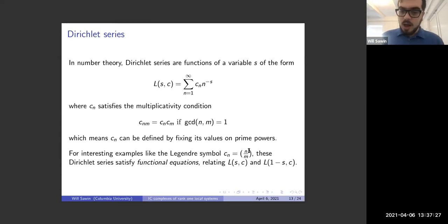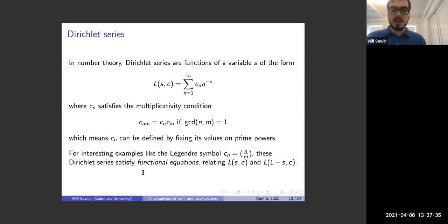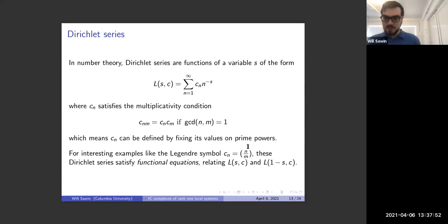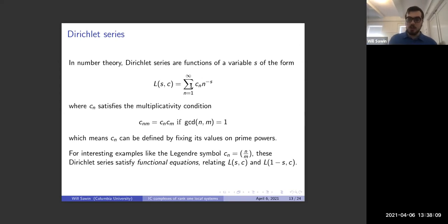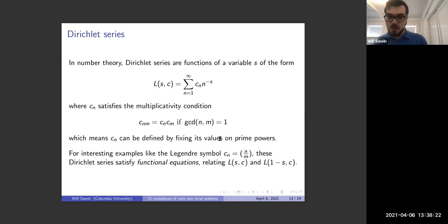One of the most important properties that Dirichlet series tend to have — depending on which multiplicative coefficients you use — are functional equations. For example, if we take C_n to be the Legendre symbol (n/M): when M is prime this is +1 if n is a square mod M, -1 if n is not a square mod M, and 0 if n is a multiple of M; for M not prime, we extend by multiplicativity. This is a Dirichlet character, and the associated Dirichlet series satisfies a functional equation — a relationship between its value at s and its value at 1-s — which is very non-obvious from its presentation as an infinite sum.